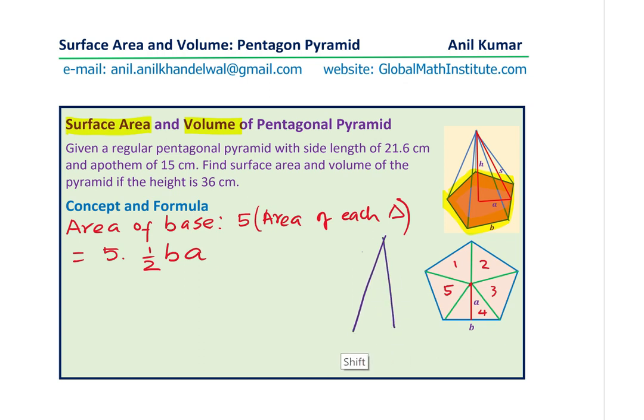So that should give you the area of these triangles. So the area of five of those triangles will be five times half of base times S. So that becomes the area of those five triangles.